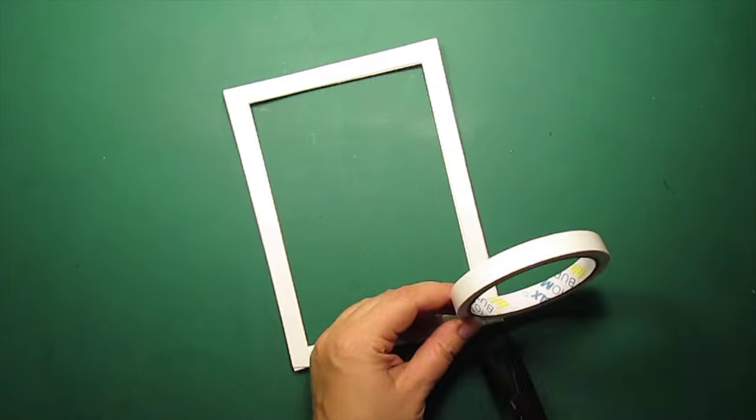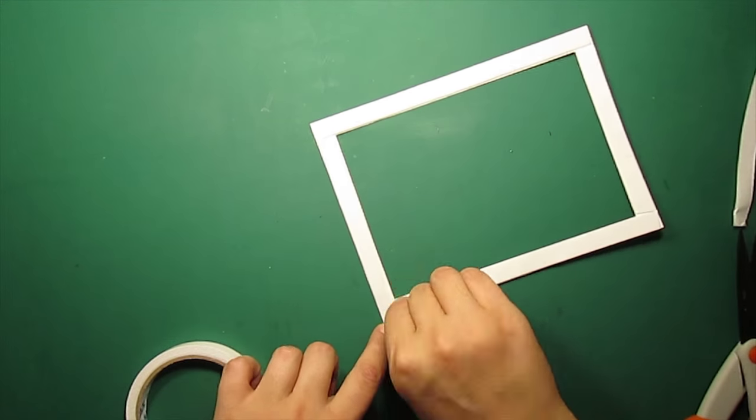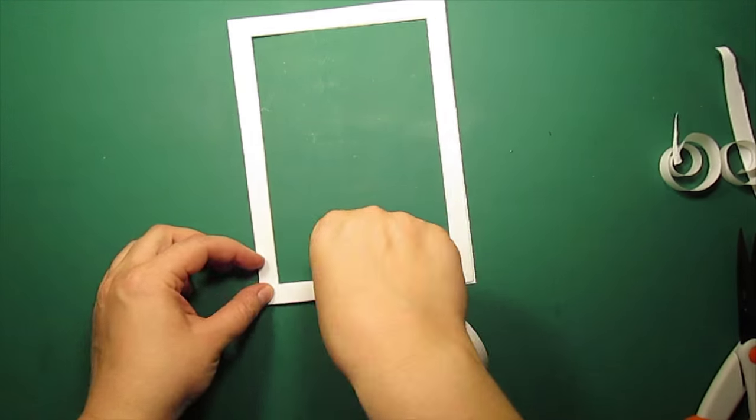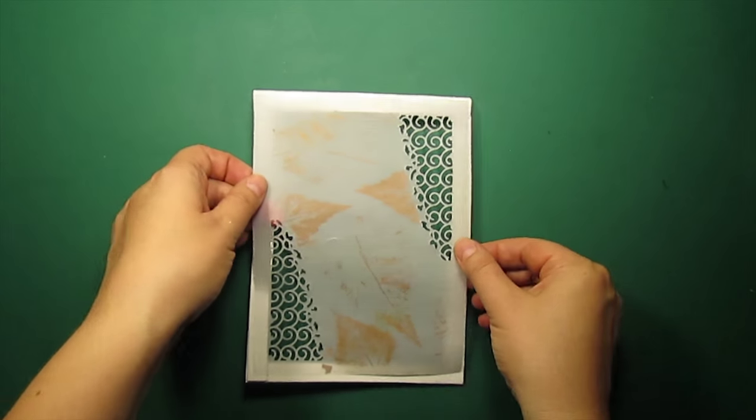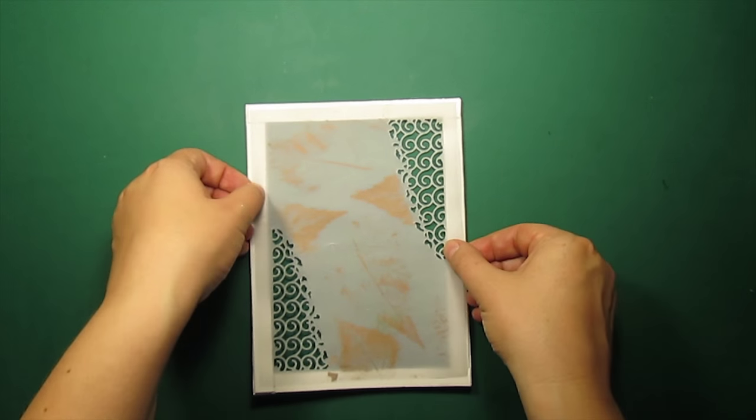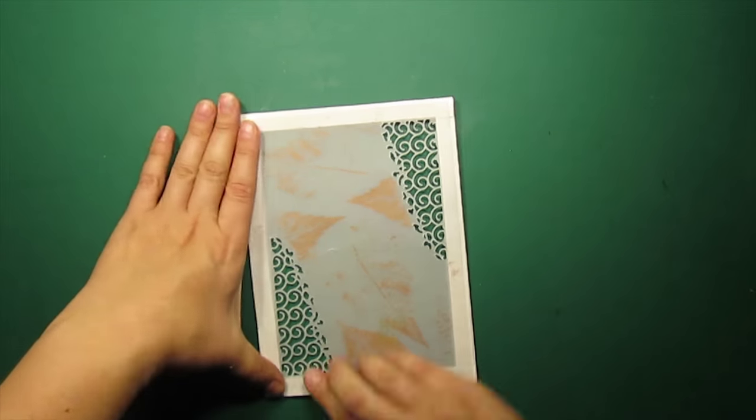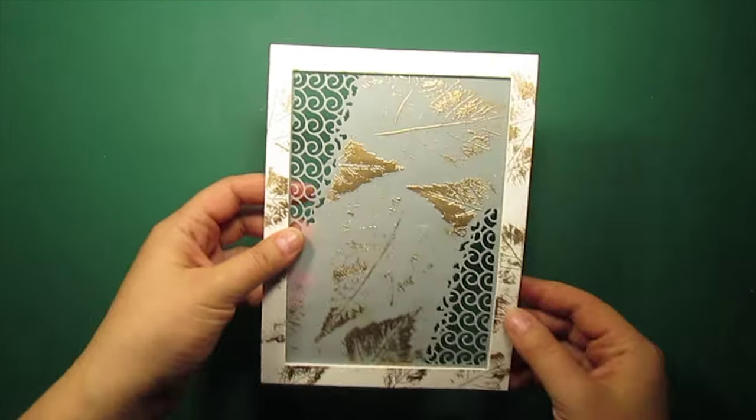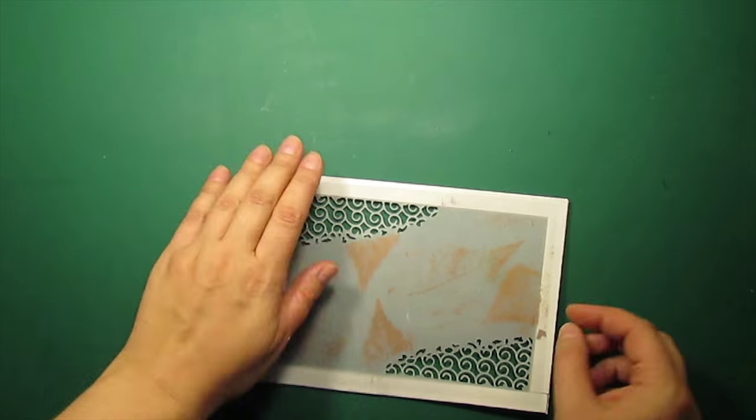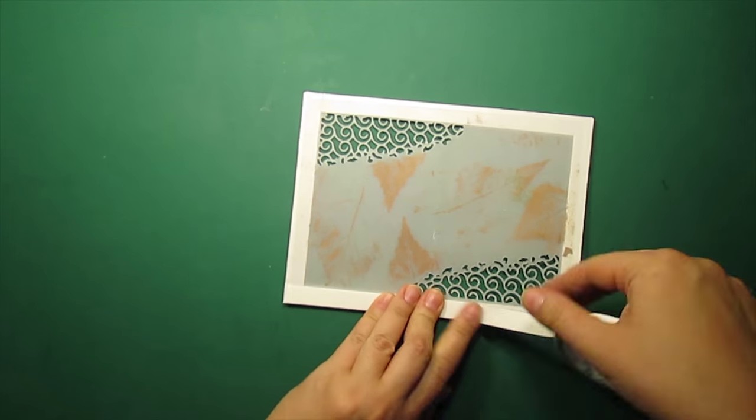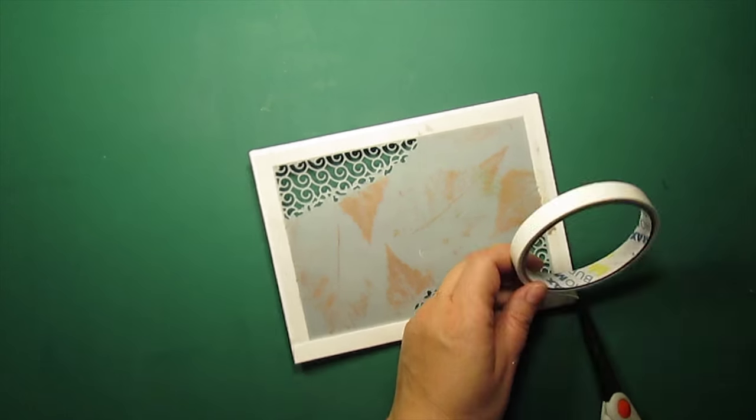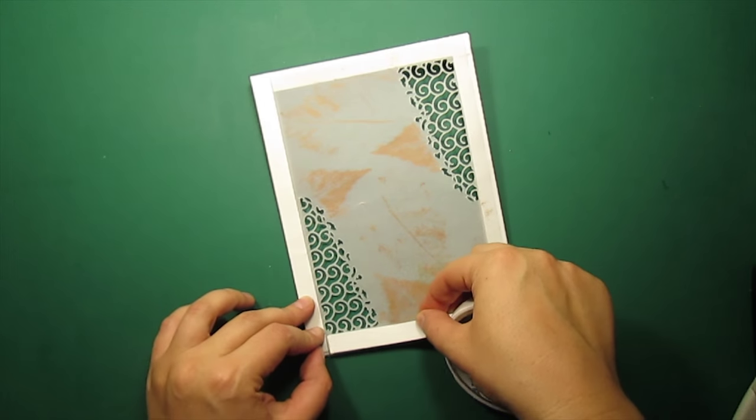To assemble the card I am putting a double layer of foam tape on the frame and then I will be attaching it to the vellum panel. Now I am putting two more layers of foam tape to attach the panel to the card base.